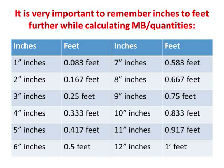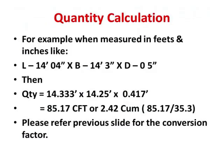A conversion table is provided where 1 to 12 inches are converted into feet. One inch is 0.083 feet, two inches is 0.167 feet — calculated as 1÷12, 2÷12, and so on. 12÷12 is 1 foot, 9÷12 is 0.75 feet, and 6÷12 is 0.5 feet. This helps when calculating quantities, which is where it matters most.